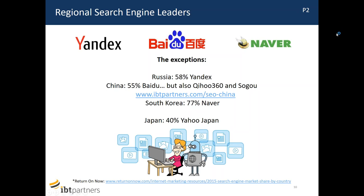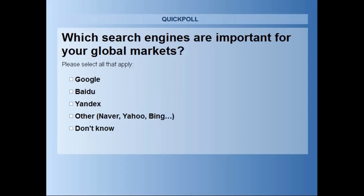Can I jump in and propose the second poll? Which search engines are important for your global markets? You can click on all that apply: Google, Baidu, Yandex, Naver, Yahoo and Bing. The results show 90% indicating Google, 7% saying Baidu for China, and 50% selecting other. That's very interesting — thank you for sharing. That was poll number two.